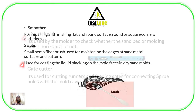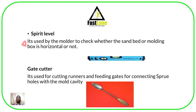Then we have a spirit level, which is used by the molder to check whether the sand bed, molding box, or flask is horizontal. Then we have a gate cutter, which is used for cutting runners and feeding gates for connecting the sprue holes with the mold cavity. When preparing the mold cavity, we create runners as passages for molten metal, and gates are where molten metal is poured to pass through the runners into the mold cavity. The gate cutter creates that connecting section.